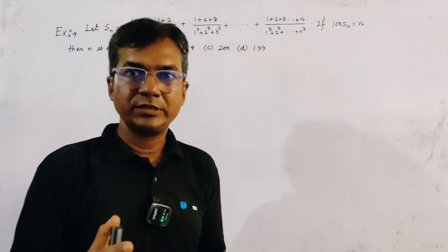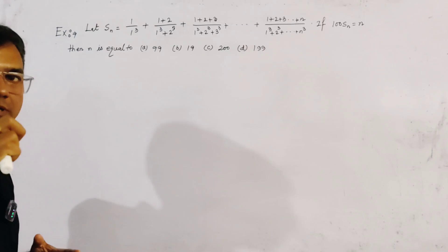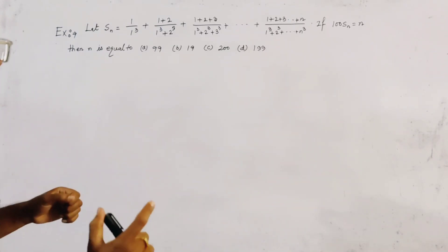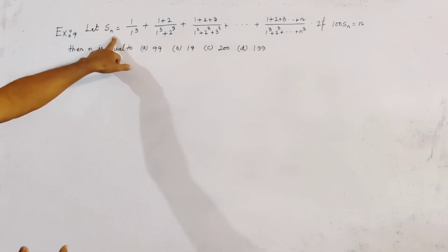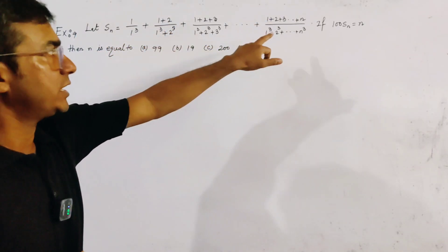This problem is from series, in particular arithmetic progression. Let Sn be given by 1/(1+q) + 2/(1+q+2q) and so on for n terms.